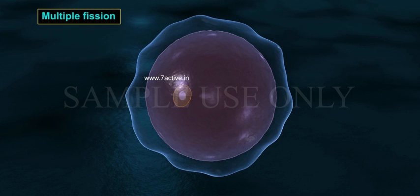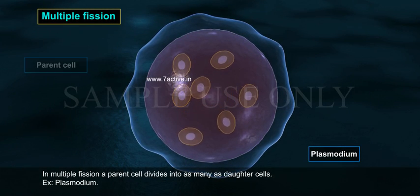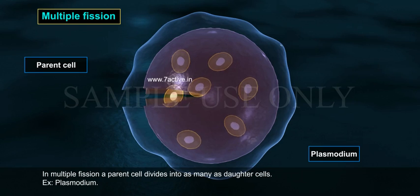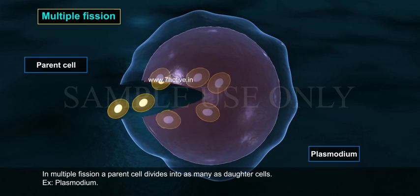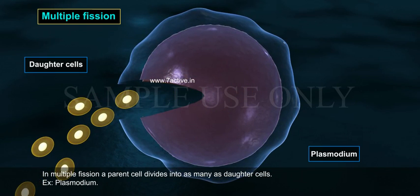Multiple Fission. In multiple fission, a parent cell divides into as many daughter cells as possible. For example, plasmodium.